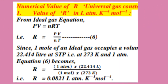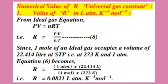Numerical value of R, where R means universal gas constant. The first value is R in liter atmosphere per Kelvin per mole. To derive this, we start from the ideal gas equation: PV equals nRT. After rearrangement, it becomes R equals PV divided by nT. This is equation number 6.